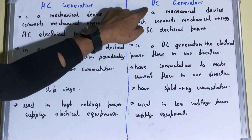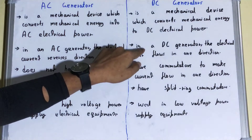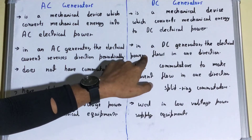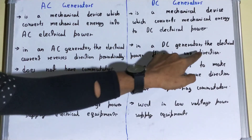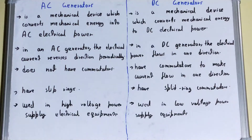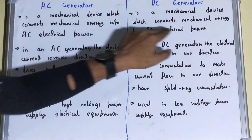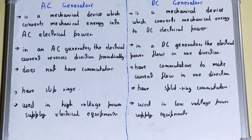In a DC generator, the electrical power flows in one direction, because the DC generator produces direct current which flows only in one direction and not in the reverse direction.